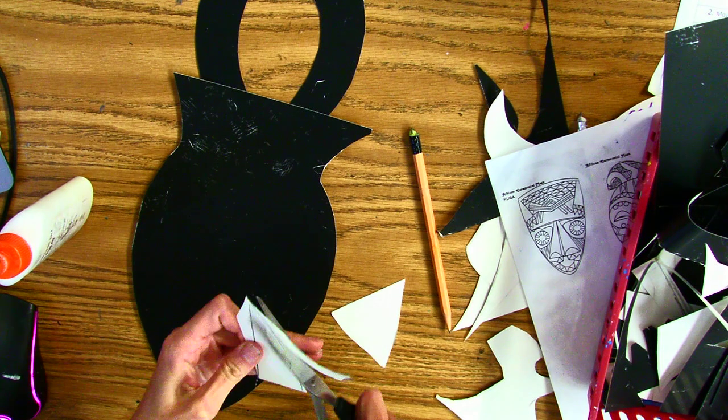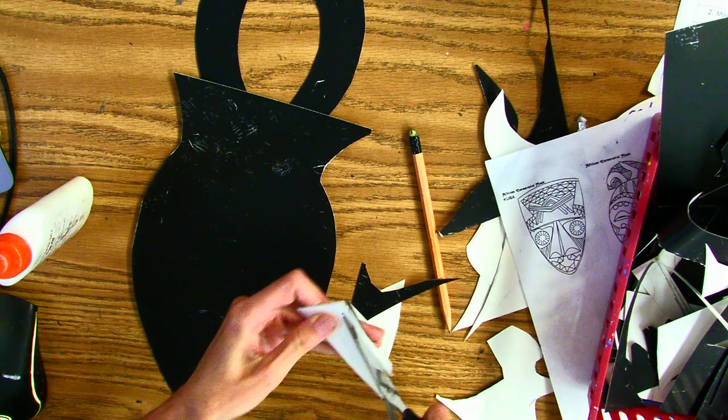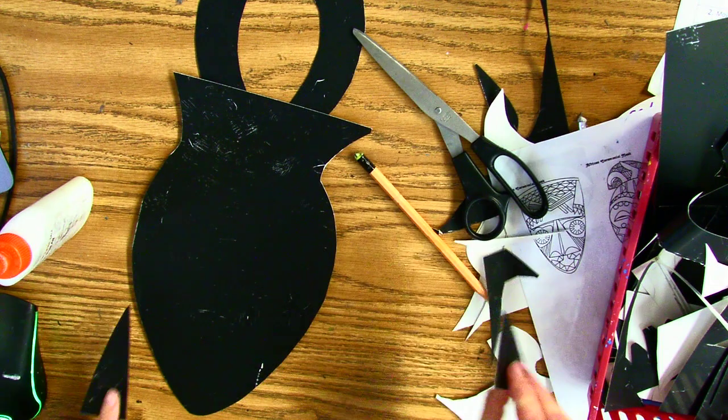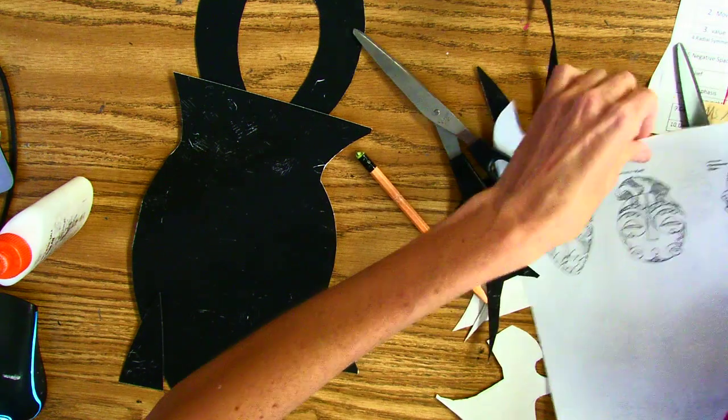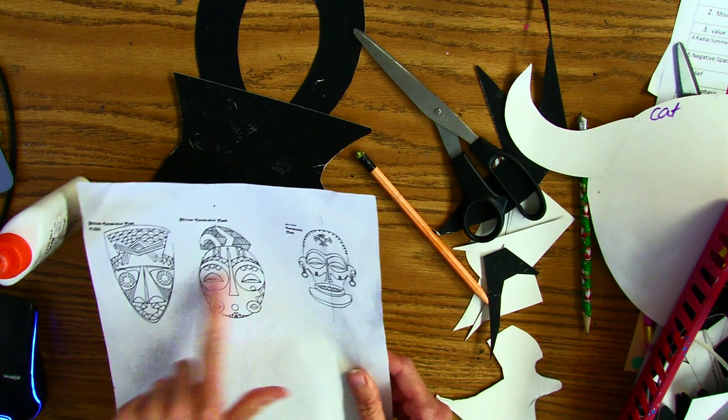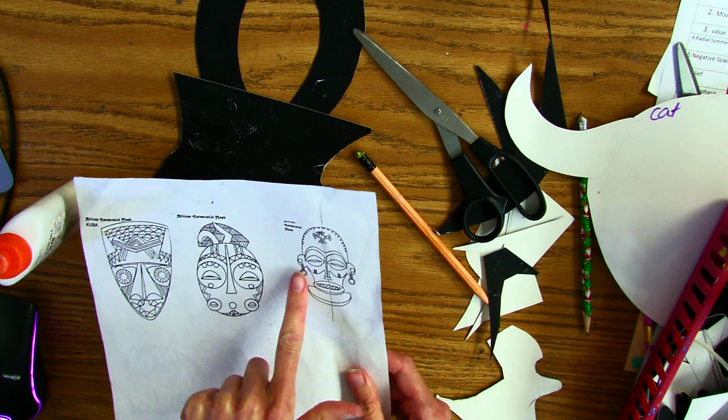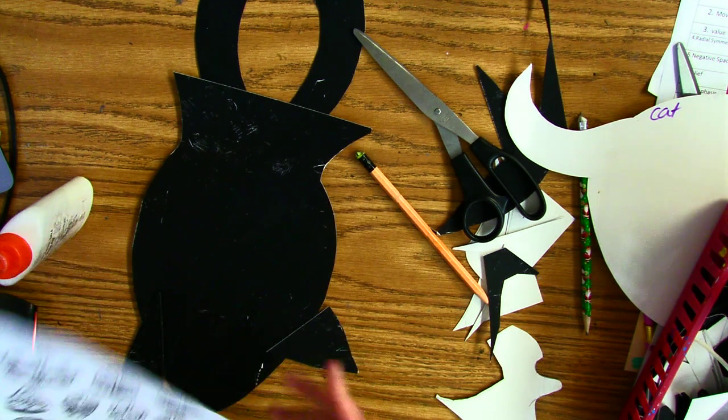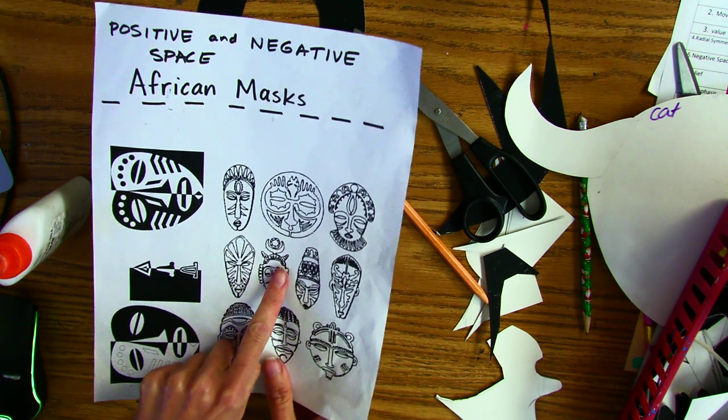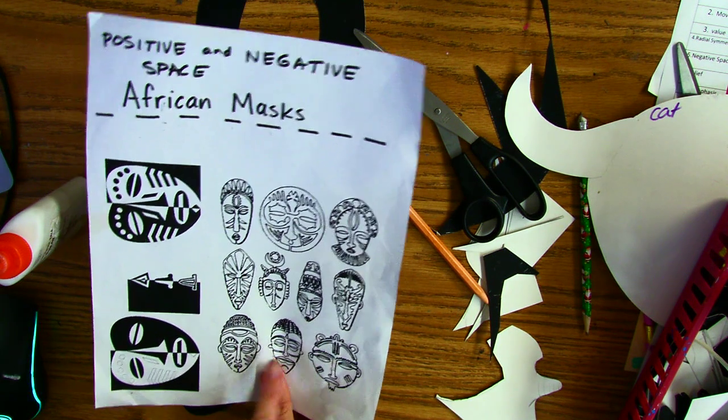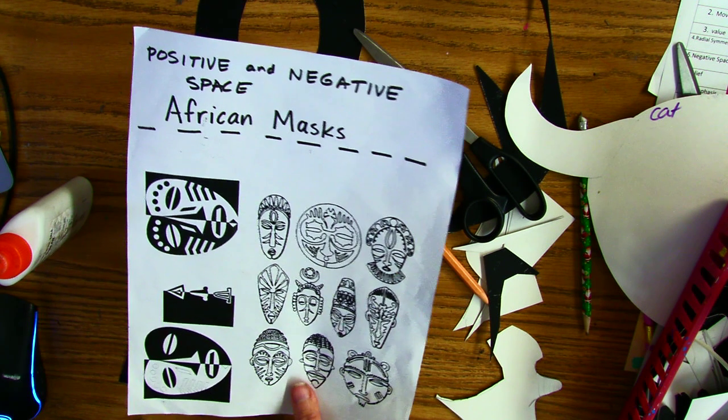My idea sheet has some good shapes that has like a neck piece, ears, earrings, head pieces, horns, ears, all these different ideas.